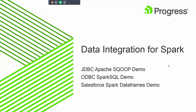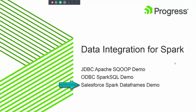I have three demos to show you. The first one is a JDBC Apache Sqoop demo, where I'm going to show you how to import external data into your Hadoop environment. In the second demo, I'm going to show you how to use your favorite BI or reporting tool to access Spark data with the DataDirect ODBC Spark SQL driver. In the third demo, I'm going to show you how to access external Salesforce data using Spark's DataFrames.